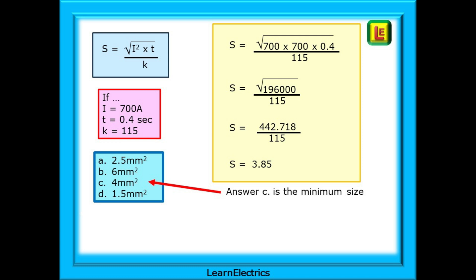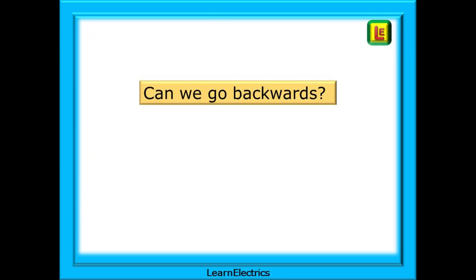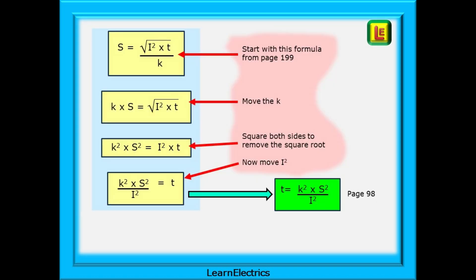Can we work the formula backwards and end up where we started from on page 98? Can we rearrange the S formula to make T the subject? Here's the formula for S, our starting point. The first thing to do is to move the K. This is on the bottom on the right so it moves to the top on the left. Now we need to remove the square root from the right hand side by squaring both sides. So we have K squared times S squared equals I squared times T. We want T on its own, so move the I squared from the top right to the bottom left. And now we have T on its own. T equals K squared times S squared divided by I squared.